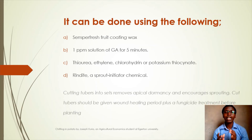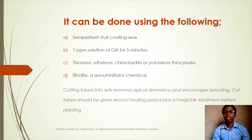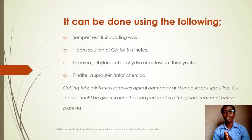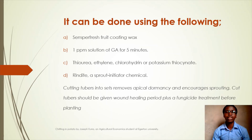Lastly, treating the tubers with Rindite, a sprout initiator chemical. You can also cut the tubers into sets — sets are pieces of the tubers. When cutting the tubers, you must ensure that each set has an eye on it. Cutting the tubers into sets removes apical dormancy and encourages sprouting. Cut tubers also need a healing period and fungicide treatment before planting to reduce rotting.